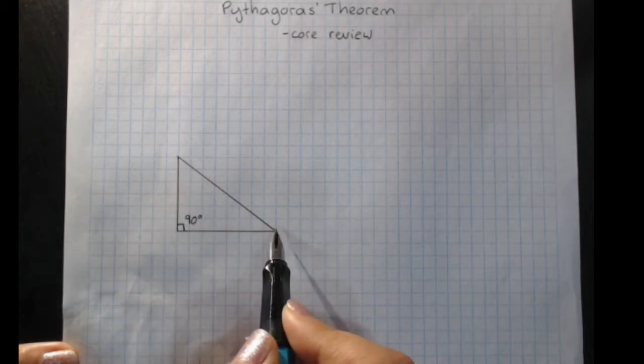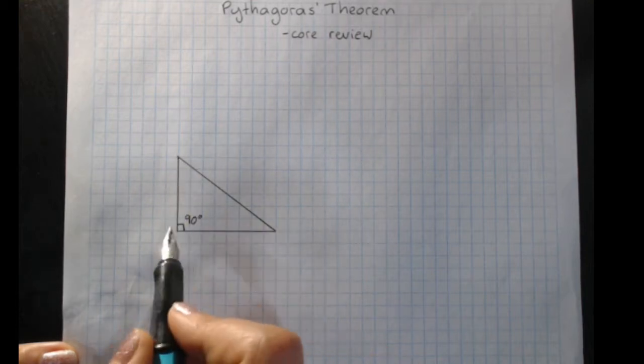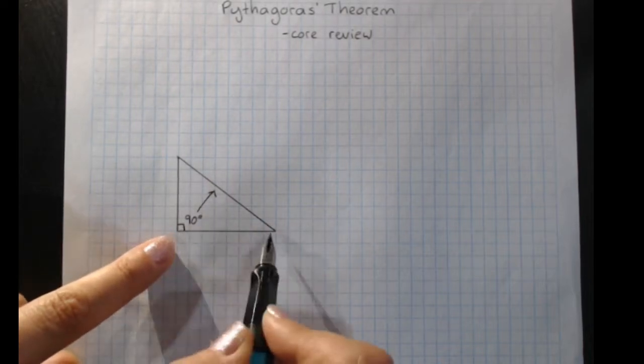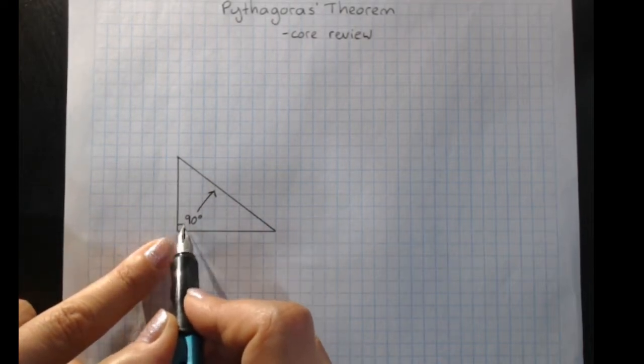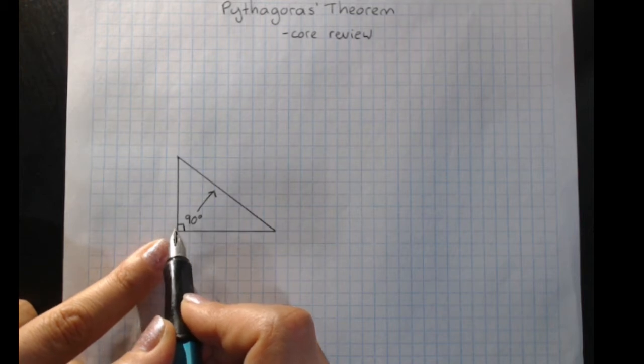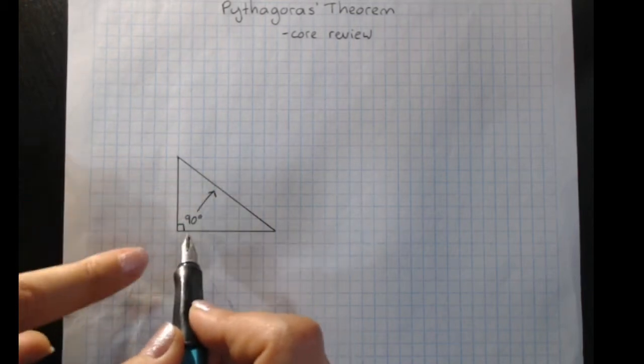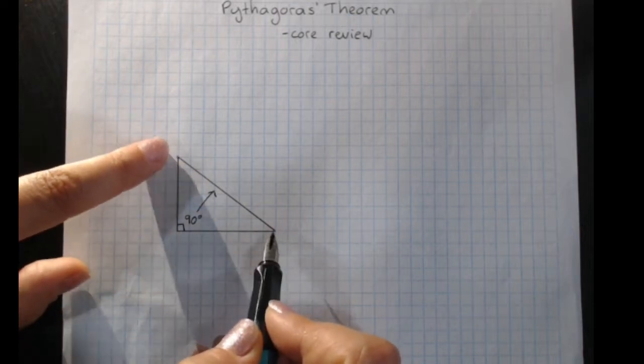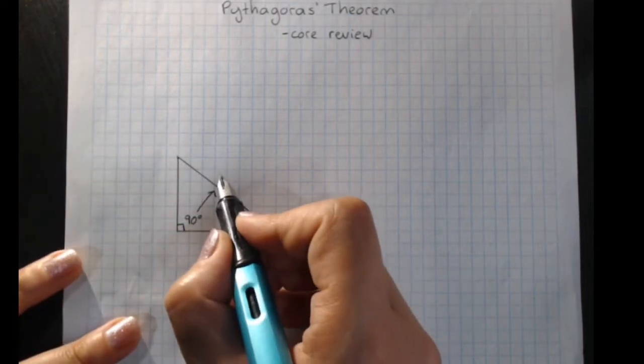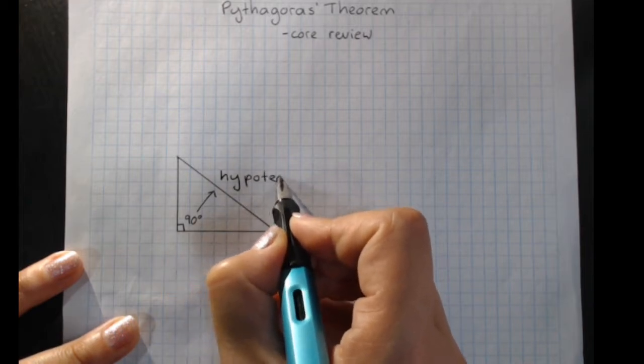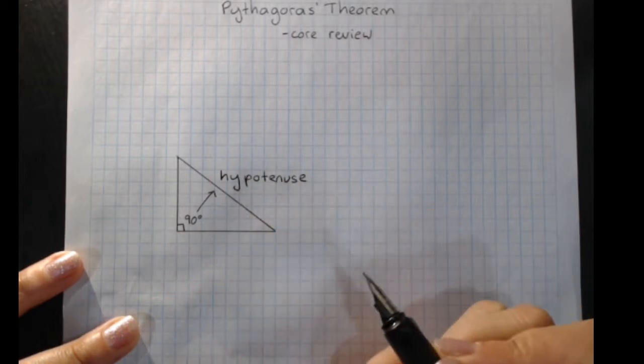The longest side of the right-angled triangle doesn't touch the right angle. You'll see these are the two short sides, and they touch the right angle. They make up the right angle. But the longest side is opposite the right angle, at the ends of those two sides. And it's got a special name, the hypotenuse.